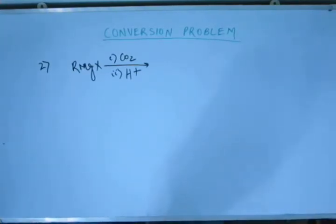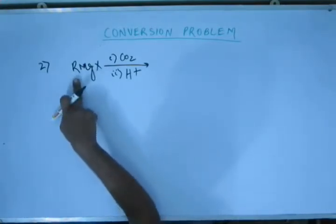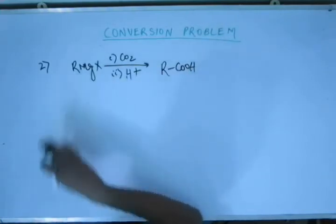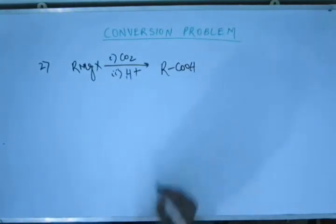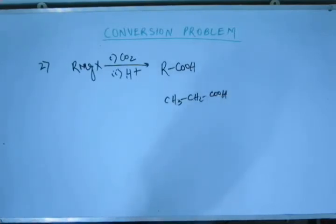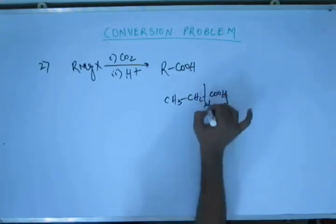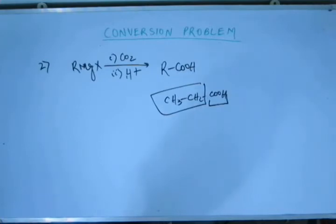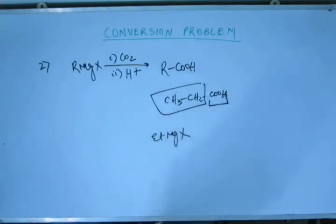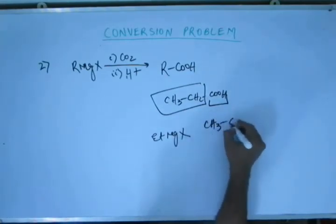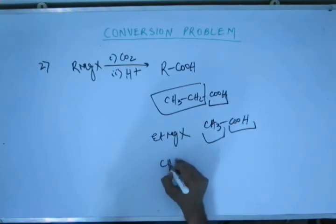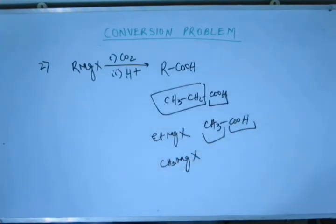So this is one method of preparation of carboxylic acid. To determine the structure of the acid: the R part remains as it is, and the COOH group is added onto R. So you will have an acid with one more carbon than whatever is in R. For example, if you have to make propanoic acid, the Grignard reagent you must start with is ethyl magnesium halide (EtMgX), because the COOH comes from CO₂ and the ethyl group comes from R. If you have to make acetic acid, then your Grignard reagent must be methyl MgX.